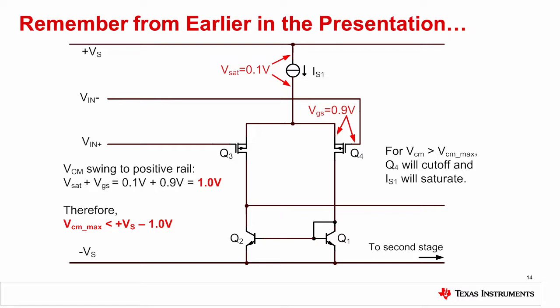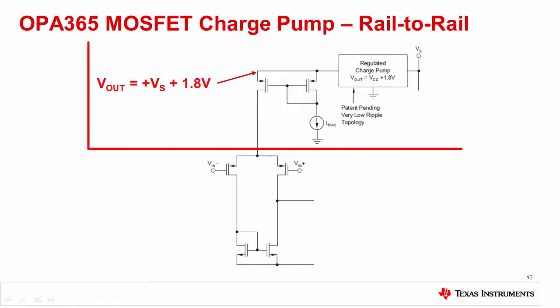Remember from our earlier discussion of a simple MOSFET input stage voltage that the input voltage swing is limited by the VSAT of the current source plus the VGS of the P channel FET. Boosting the supply voltage internally can overcome this limitation because the input voltage swing is then relative to the boosted internal supply rather than the externally applied power supply voltage.